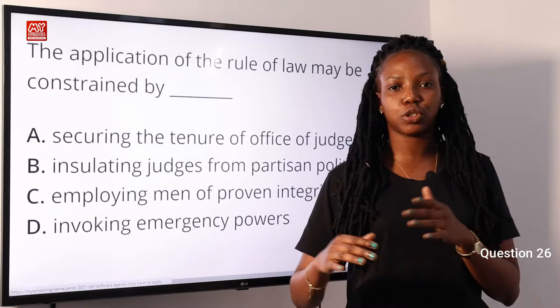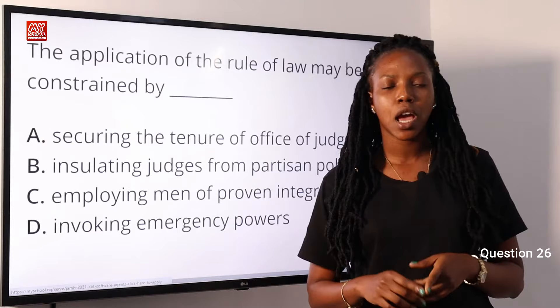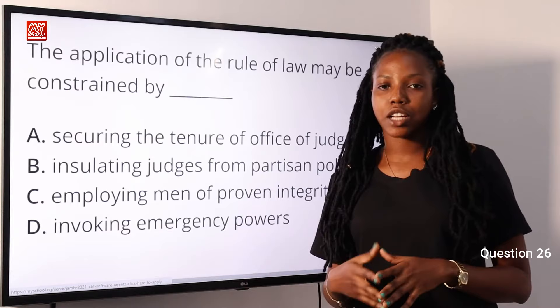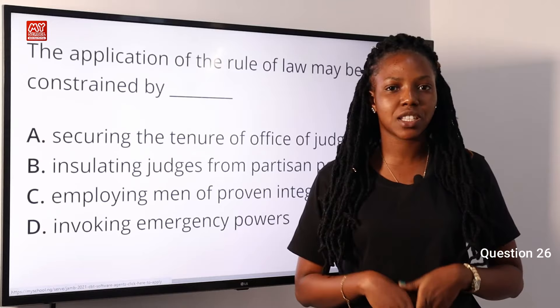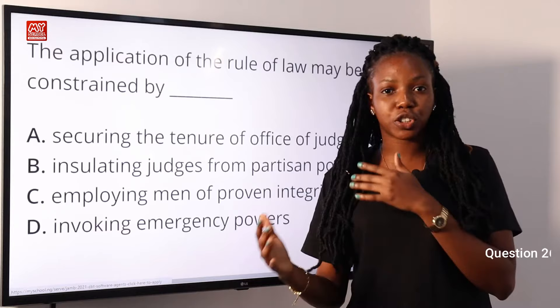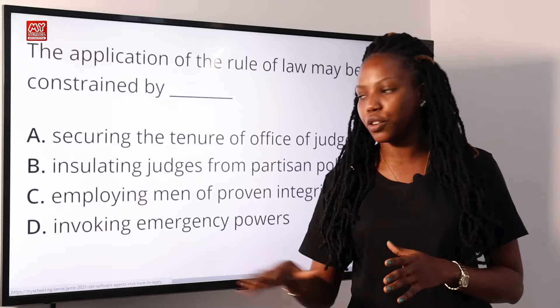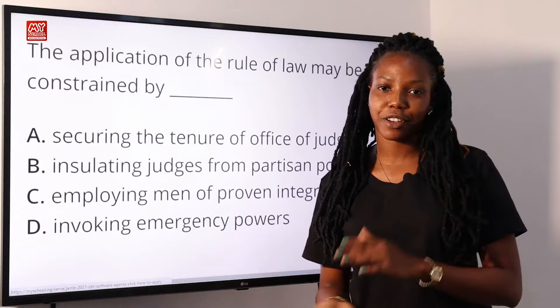Another example is customs and tradition — in a bid to respect some culture and tradition, we might decide to neglect the rule of law. Another example is the rich: through their wealth, they can try to dodge punishment for crimes. This is another limitation to the rule of law. So invoking emergency power is a limitation to the rule of law, and option D is the correct answer.